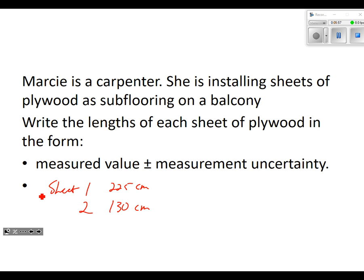We're supposed to write the lengths of each sheet of plywood in the form measured value plus or minus measurement uncertainty. So it's going to be 225 is the measured value plus or minus. If it's measured in centimeters, that means the precision is one centimeter. The precision is one centimeter, which means the uncertainty is 0.5. So it'd be 225 ± 0.5. Then the next one should be 130, again plus or minus 0.5. It's the same thing. You just write it in the plus or minus format.